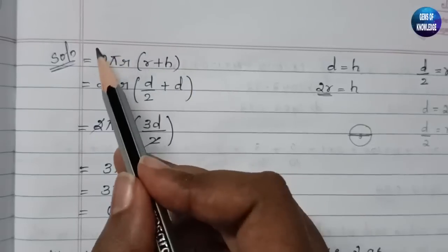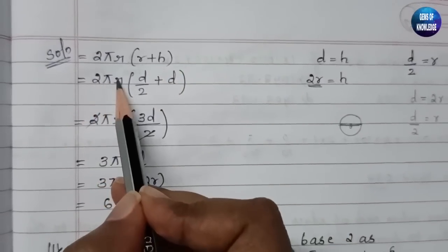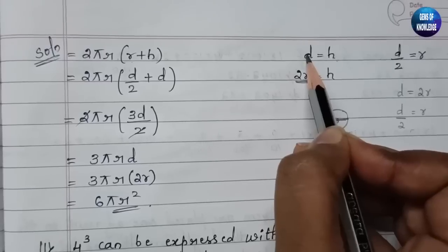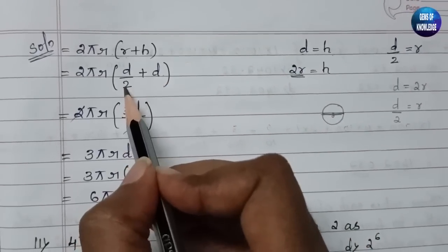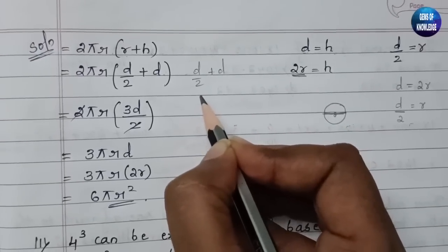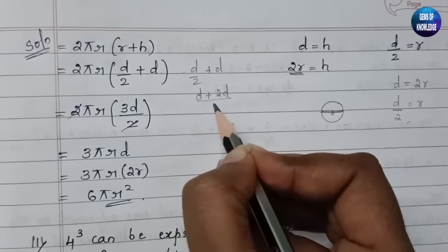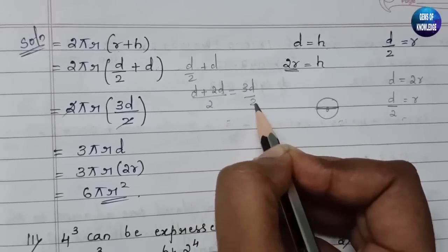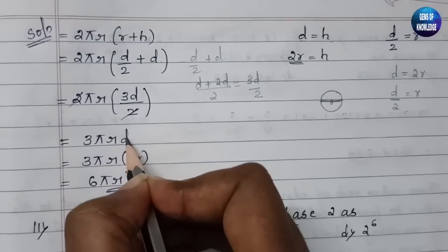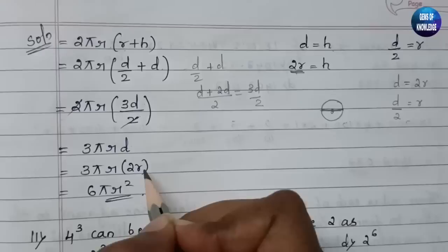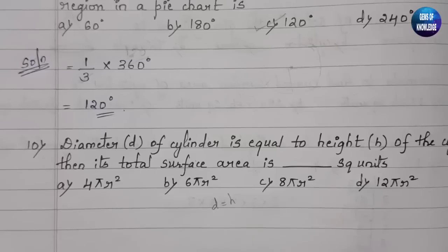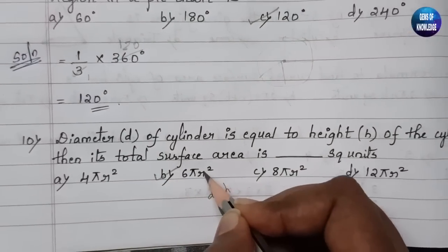The formula for TSA of a cylinder is 2πr(r + h). Substituting r = d/2 and h = d: r + h = d/2 + d = 3d/2. So TSA = 2π × (d/2) × (3d/2) = 3πd/2 × ... Simplifying and substituting d = 2r, we get 3π × 2r × r = 6πr². So the correct answer is option B, that is 6πr² square units.